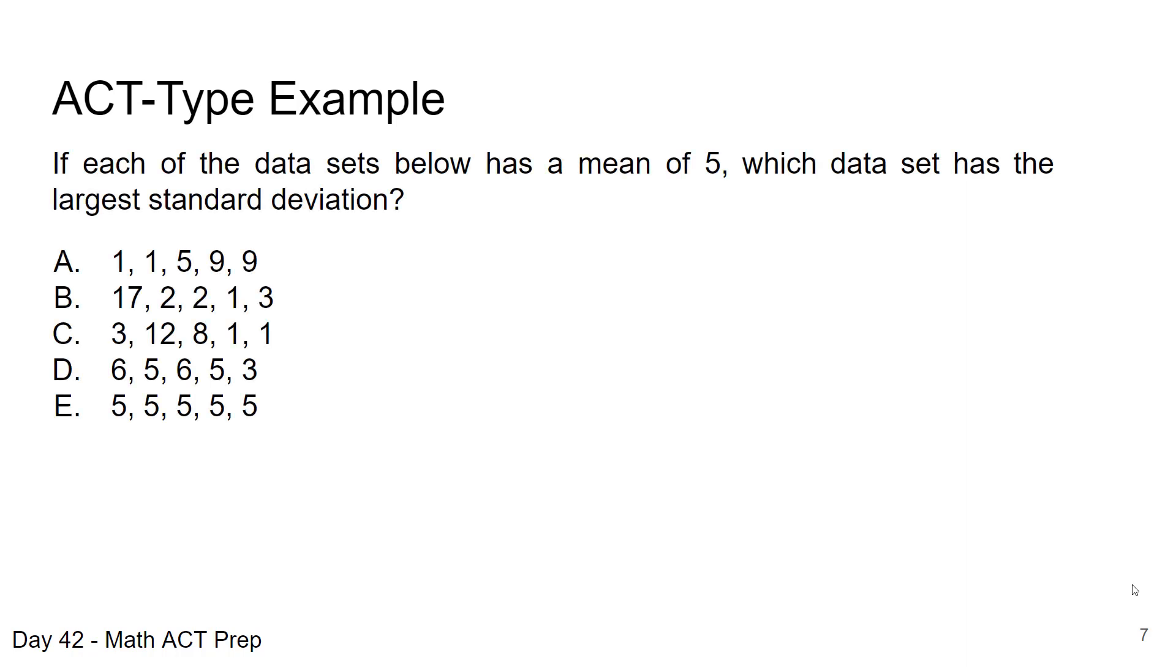Let's take a look at this ACT type question. If each of the data sets below has a mean of 5, which data set has the largest standard deviation? So we're given some important information here that each data set in choice A through E has a mean of 5.